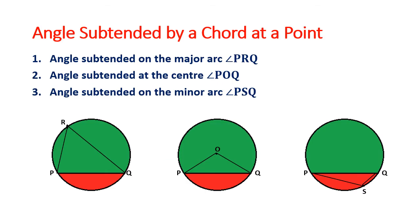The first topic we have for the day is the angle subtended by a chord. You know what a chord is — a line segment whose endpoints lie on the circle. Here I have taken PQ as the chord, whose endpoints are on the circle.